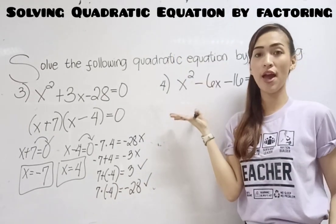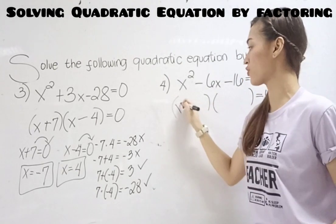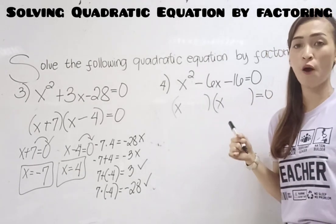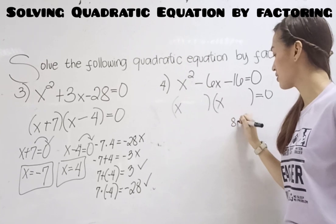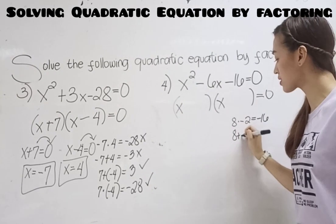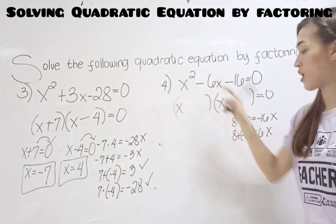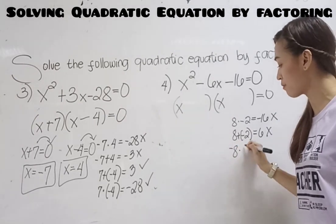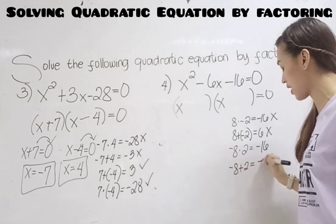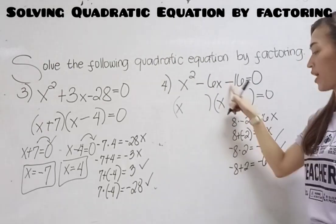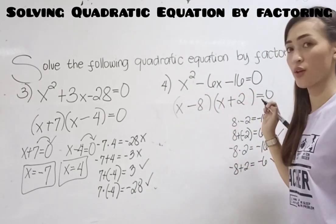Number 4: x squared minus 6x minus 16 equals 0. Factor x squared — the factors are x times x. Think of two numbers: when multiplied the answer is negative 16, and when added the answer is negative 6. For example, 8 times negative 2 is negative 16, but 8 plus negative 2 is 6 — not correct. How about negative 8 times 2? The answer is negative 16. And negative 8 plus 2 is negative 6. So the factors are negative 8 and positive 2.